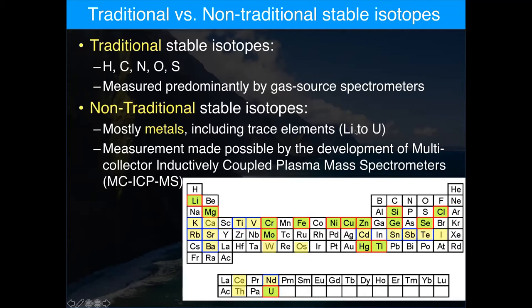Our specialty is metal isotope geochemistry. Metal isotopes are part of the so-called non-traditional stable isotopes, to distinguish them from the traditional light stable isotopes such as hydrogen, carbon, nitrogen, oxygen, and sulfur. Those light traditional isotopes were measured predominantly by gas source spectrometers. The non-traditional stable isotopes are mostly metals, including trace elements.